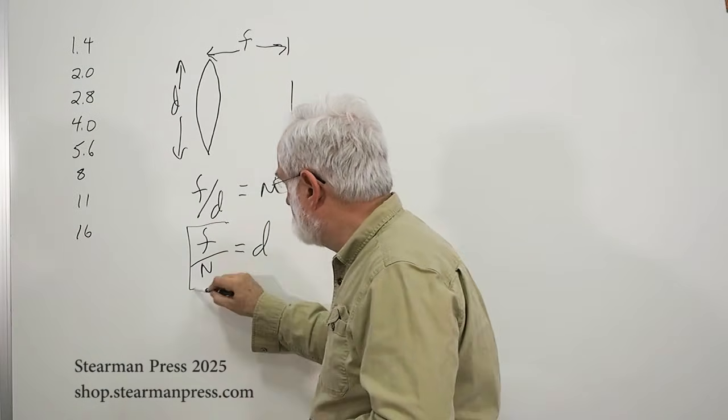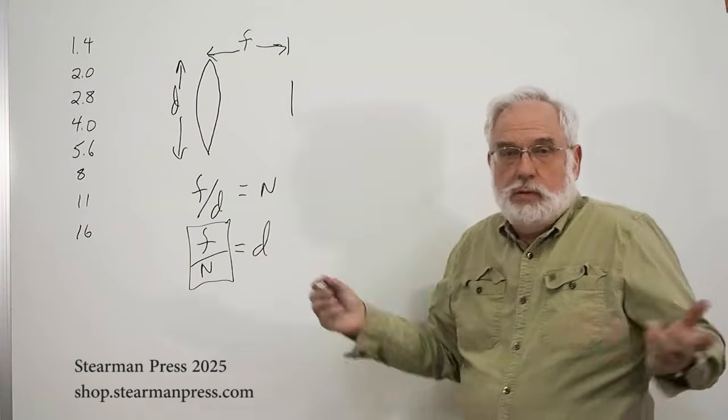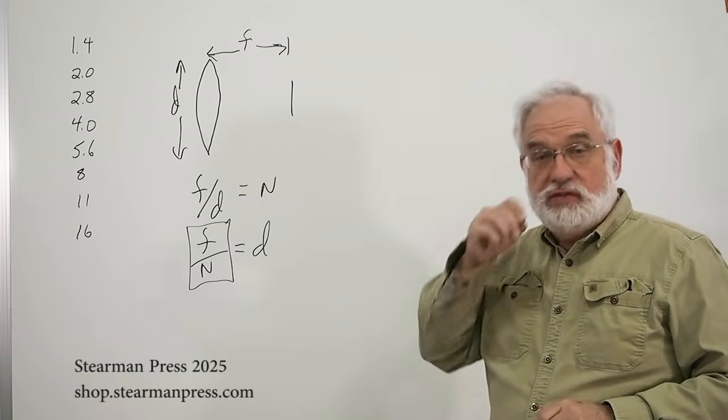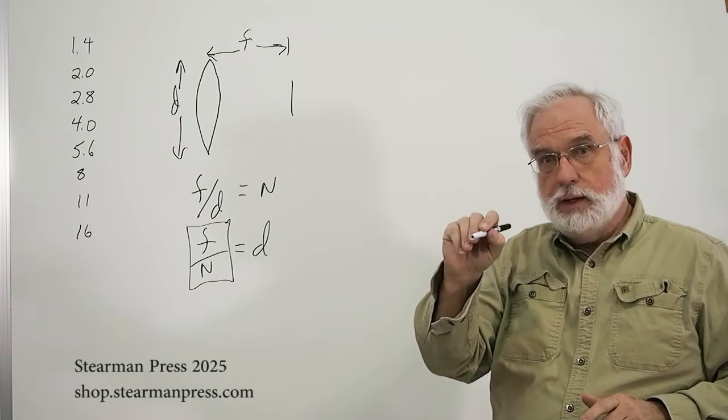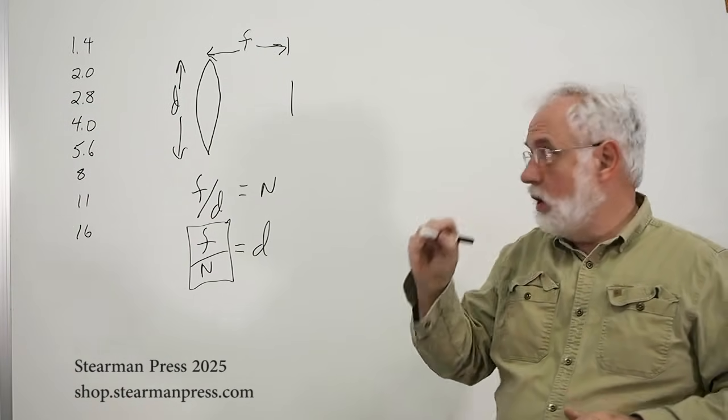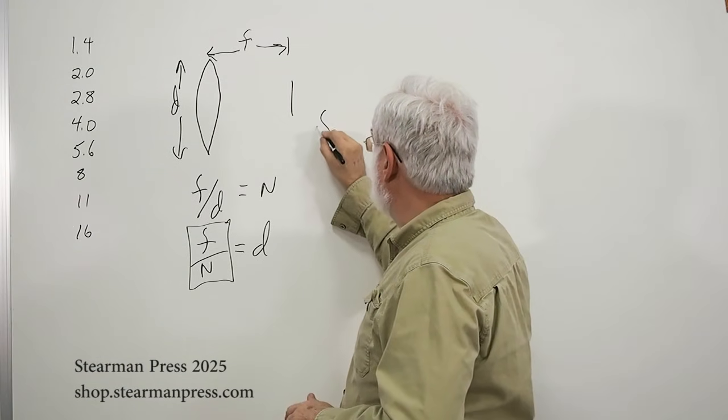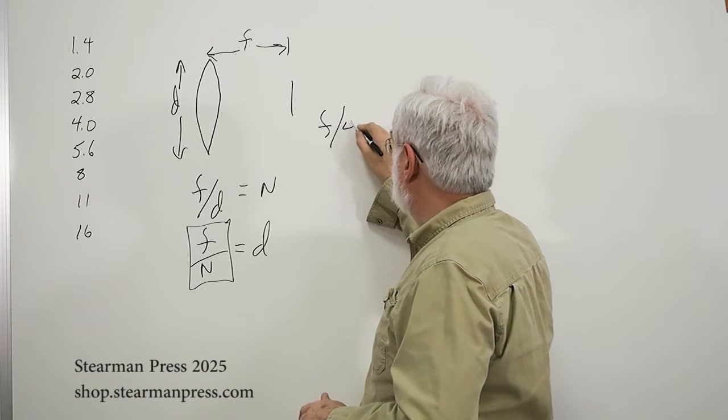Well, this nomenclature is what we've been stuck with ever since. And you'll see this on a lot of old lenses, where instead of just saying f4, it will actually be written f slash 4.